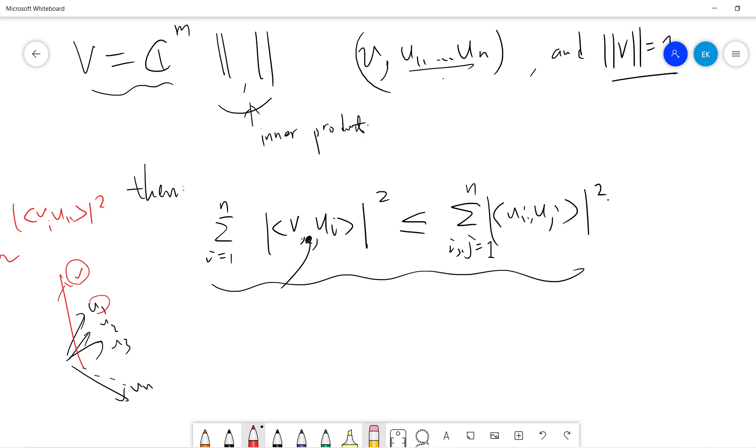So you can view the V Ui squared as a correlation of V from Ui. So norm of V U1 squared is basically the correlation from V and U1. And the V U2 squared is basically the correlation from V and U2. So suppose the left hand side is large.